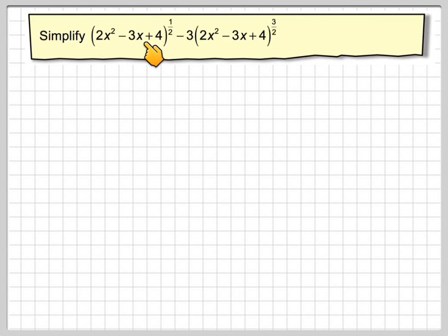Simplify (2x² - 3x + 4)^(1/2) - 3(2x² - 3x + 4)^(3/2). Let's just write that out for one second.